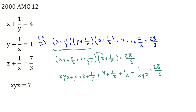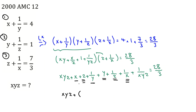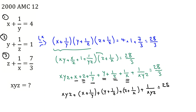Now, if we look carefully, we can recognize the original equations within the expansion. The terms x and 1/y together are exactly the first equation. The terms y and 1/z are the second equation. And z and 1/x are the third equation. So the left-hand side becomes xyz plus (x + 1/y) plus (y + 1/z) plus (z + 1/x) plus 1/(xyz), all equal to 28 over 3.